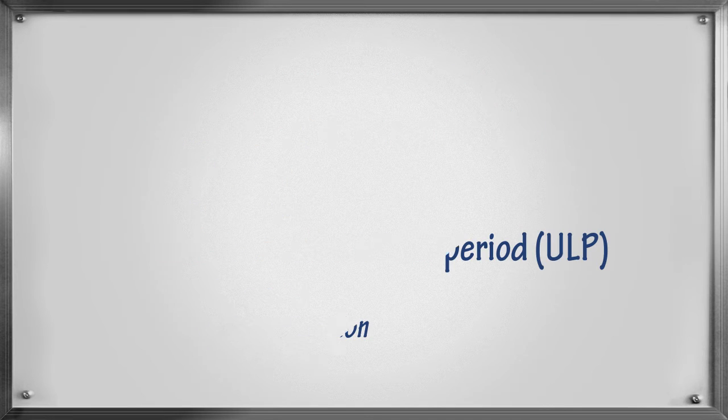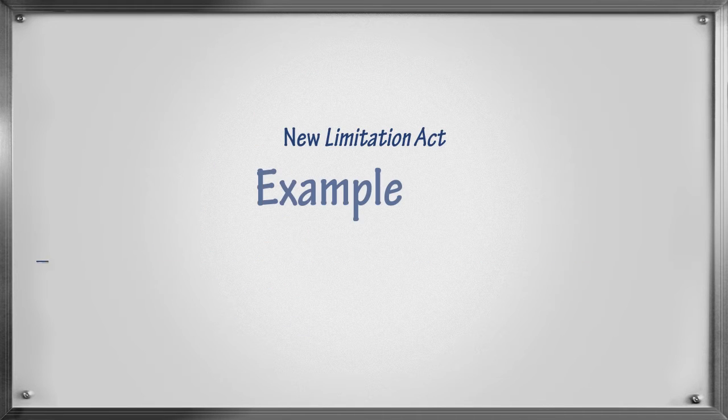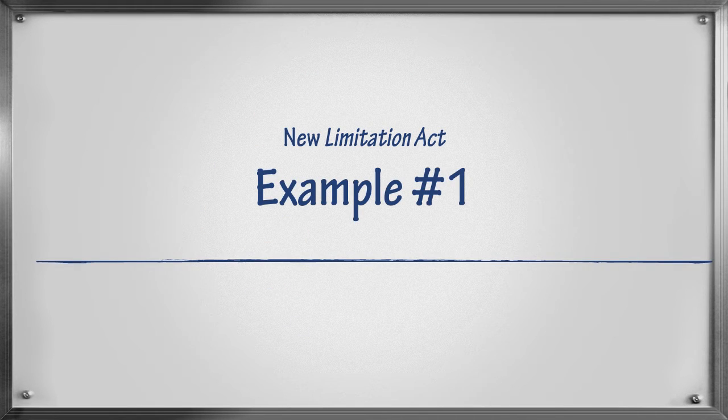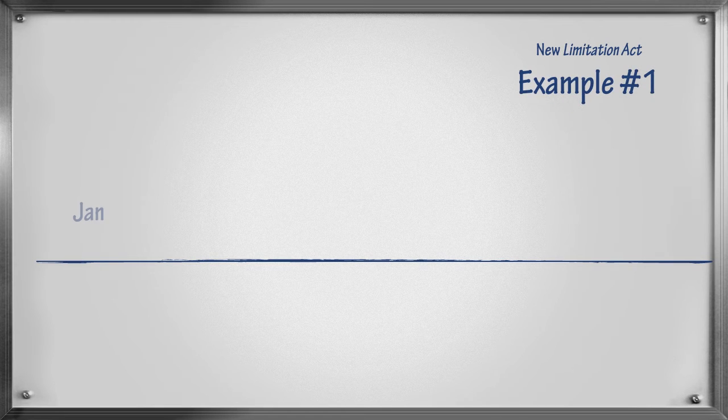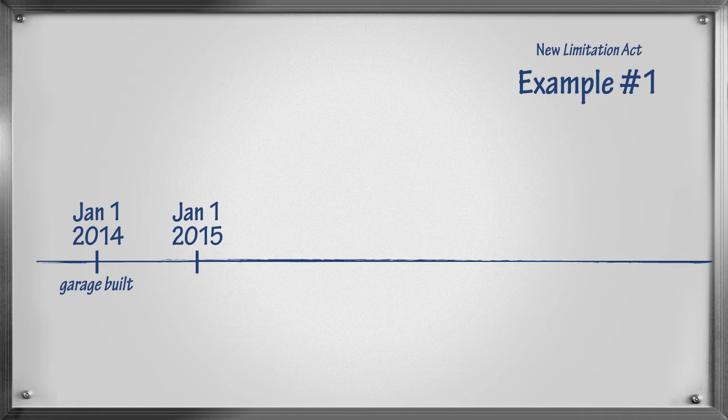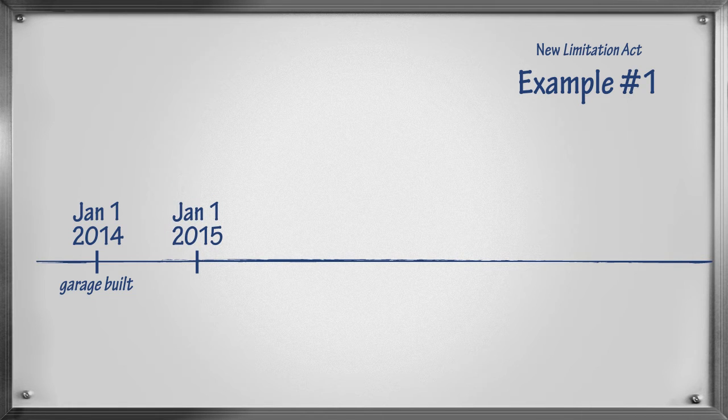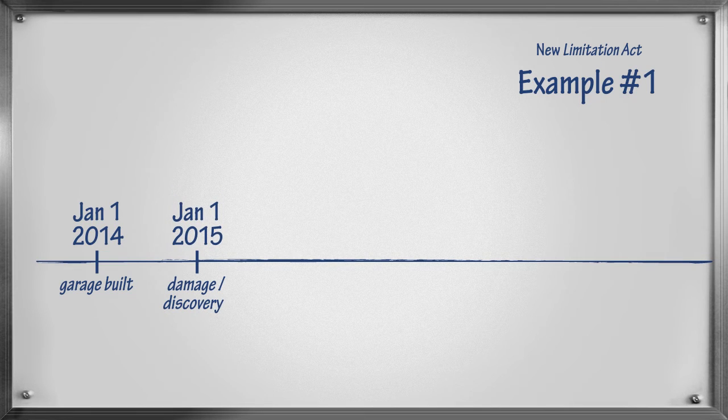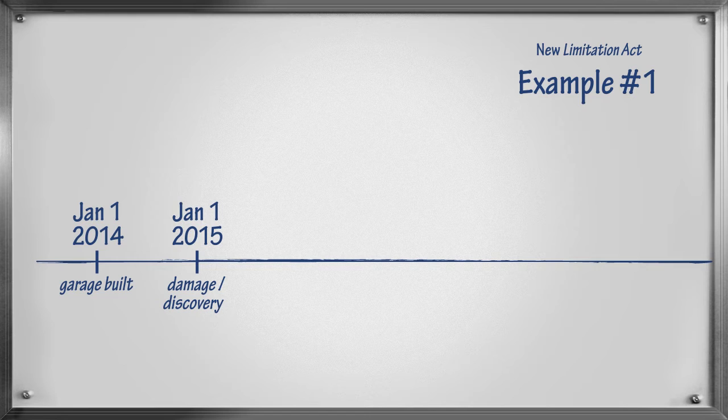Let's look at a couple of examples. Example 1: Mary has a garage built by a contractor on January 1, 2014. However, one year later, on January 1, 2015, the garage floor begins to crack and a wall starts sinking into the ground. Assuming that Mary knows of, or discovers, the damage to her garage on January 1, 2015, the date that the garage wall begins to sink, when do the Limitation Periods begin?